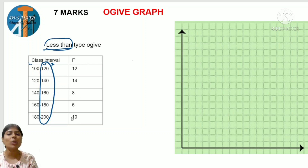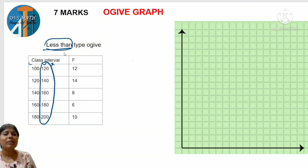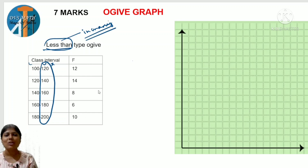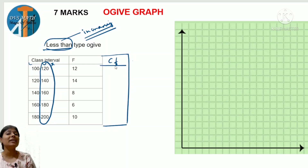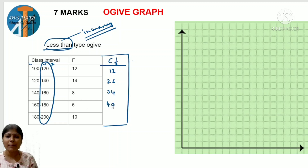Now observe the frequency. In the problem, sometimes they directly give CF - cumulative frequency - and sometimes they give just frequency. How to identify? If the numbers are in increasing order, it is less than type and you need to find CF. CF is found by adding frequencies from top. The first number is written as it is, then we add successively.